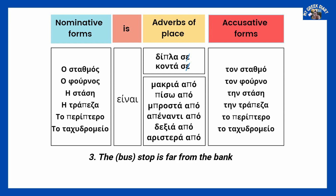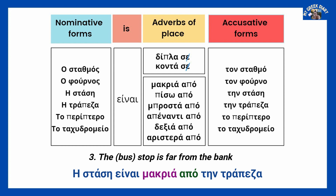TRIA. I STASI INE MAKRIA APO TIN TRAPESA. Here, I STASI is the nominative. MAKRIA APO — here we have changed the preposition. And then, TRAPESA in the accusative form. I STASI INE MAKRIA APO TIN TRAPESA.